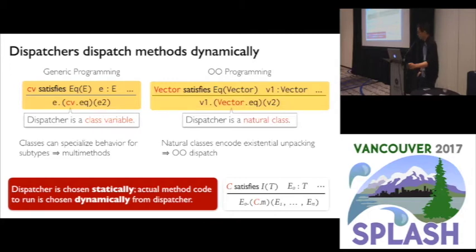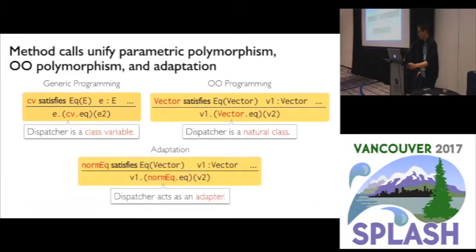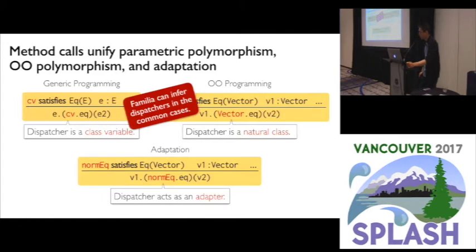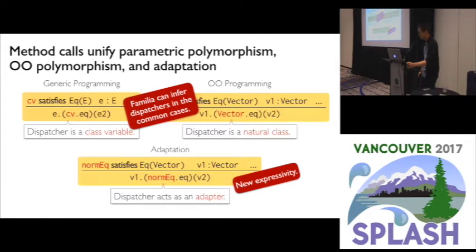In addition to generics and objects, there is a third case that this generalized form of method call unifies: adaptation. Adaptation can be used to add new behavior or rebind existing behavior in an object — for instance, comparing two vectors using a notion of equality other than the natural equality. Parametric polymorphism and OO polymorphism are the common cases where Familia can infer the dispatcher, giving the programmer a familiar experience. Adaptation is the less common case; it's similar to extension methods in C#, but more expressive, and in Familia it falls out naturally as a special case of the generalized method call.